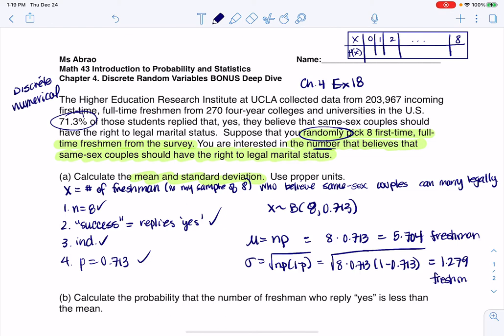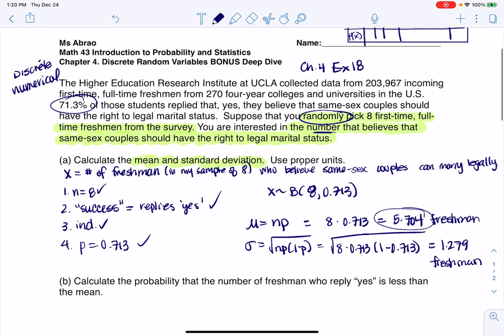So what that's saying is when we talk to 8 students, we think about 5.7 of them are going to be in favor of same-sex couples having the right to legally marry. And I know that you can't have exactly 5.7, it would either be 5 or 6 or 7, but on average, if we repeated this again and again, we would get 5.704.